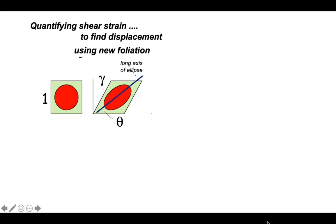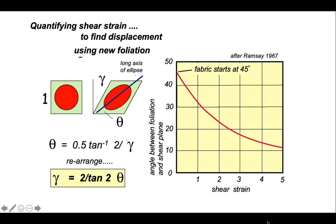Here we have a simple before and after for a shearing of a square with a circle in it. So the circle becomes an ellipse. The long axis of the ellipse is the orientation of the foliation. And that is making an angle with respect to the shear plane of theta. And here's the trigonometry that relates theta to the shear strain gamma. And we can plot these simply on here. So rather than doing that rather clumsy expression, we can simply just read off the values from this graph, which was developed by John Ramsey in the 1960s.